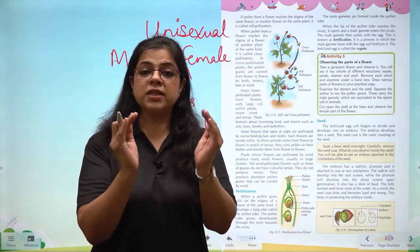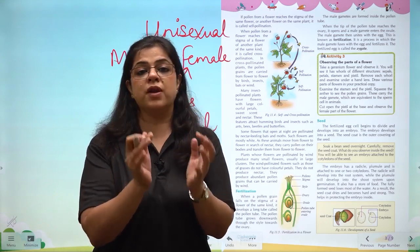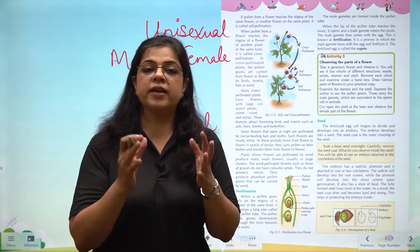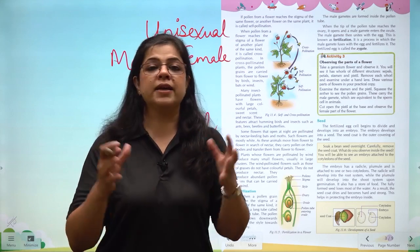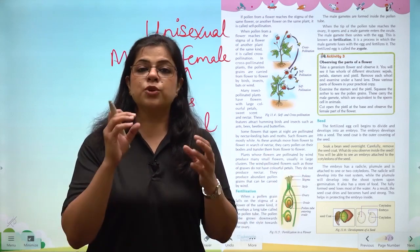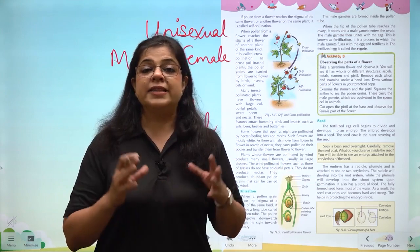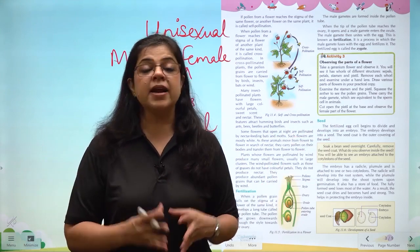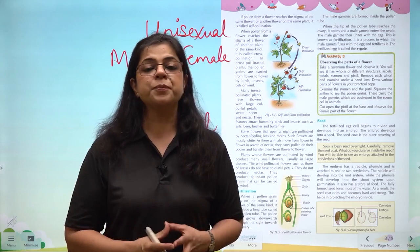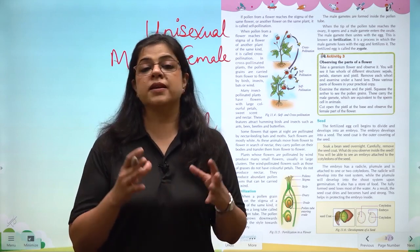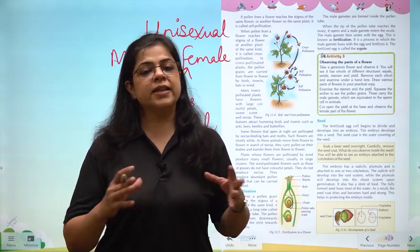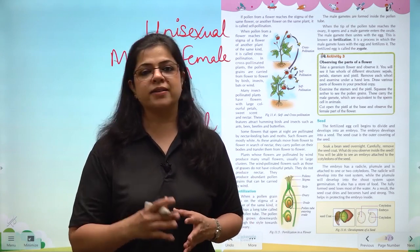The ovary is the part of the flower that converts into a fruit. When animals, birds or humans eat the fruit, they discard the seeds. These seeds are dropped here and there, and when they find the right temperature, warmth, moisture and air, they grow into a new plant.